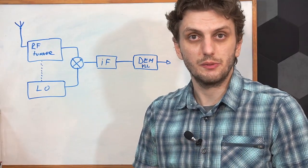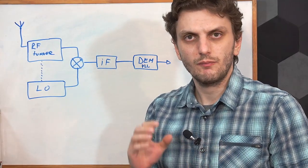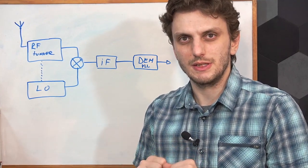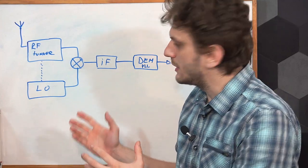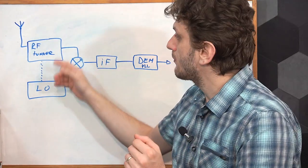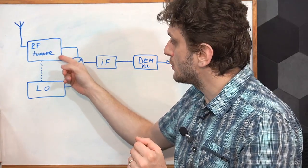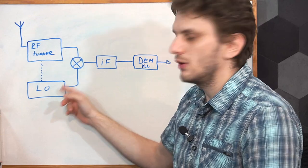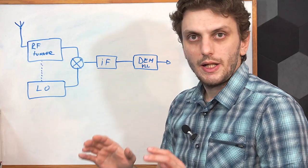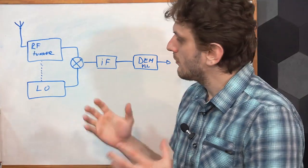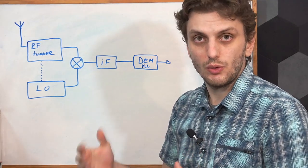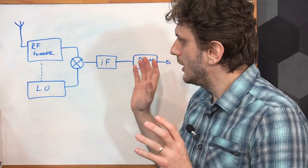Now regarding the actual signal that we will be demodulating, normally you don't really work with the initial radio signal, but rather with a different one. So commonly in a radio, you've got your antenna picking up the signal, a local radio frequency tuner, and a local oscillator. The tuner and oscillator have interlinked frequencies, so that when you mix them, you can obtain a constant frequency called the intermediate frequency.